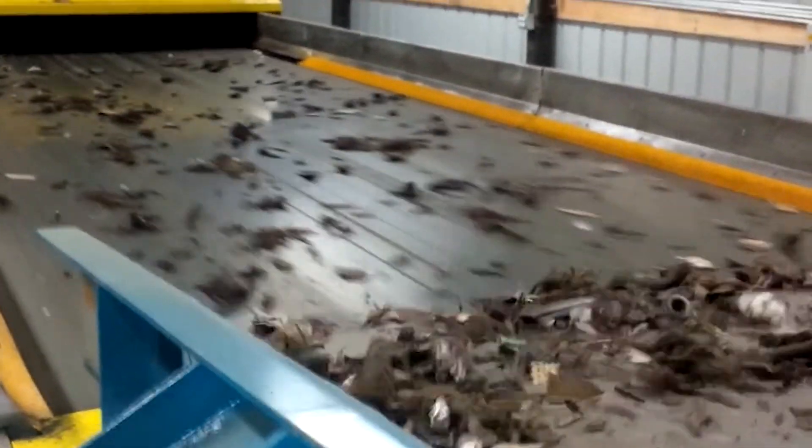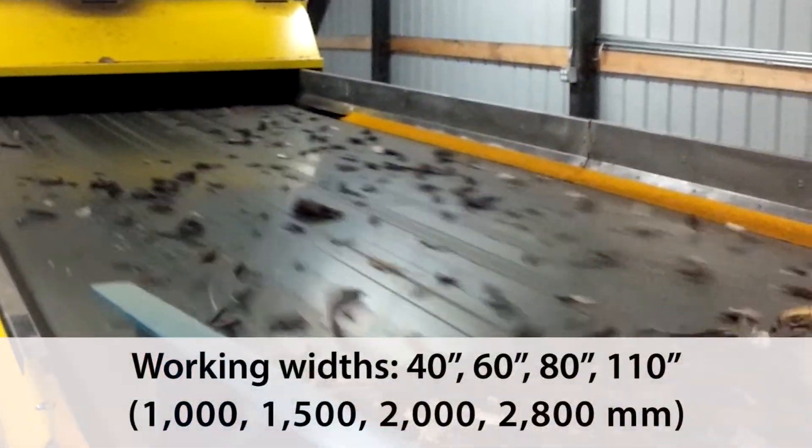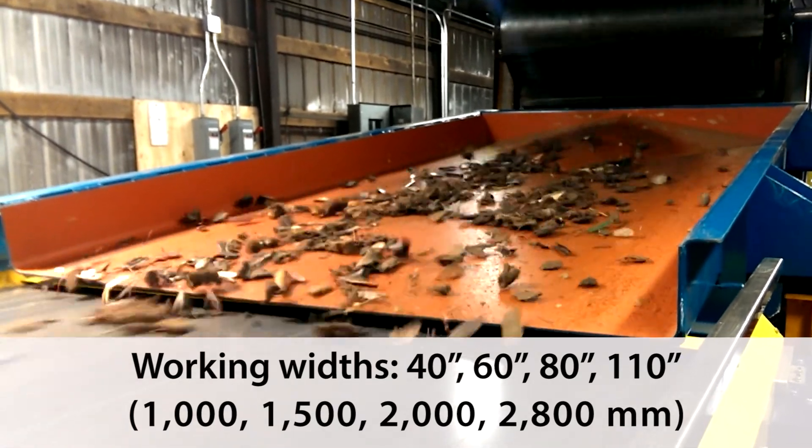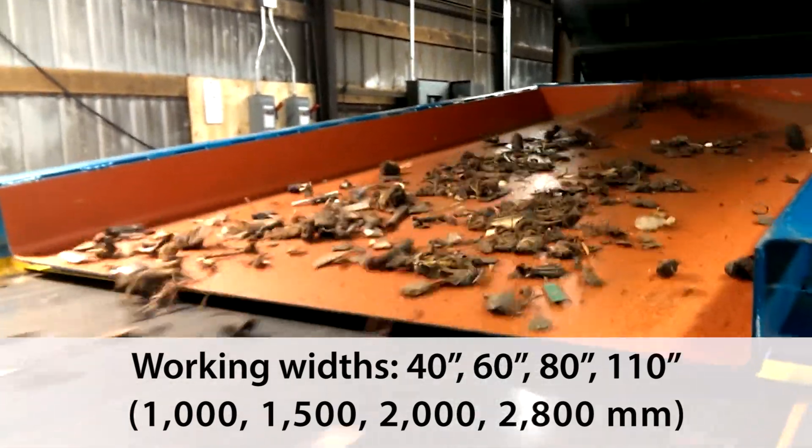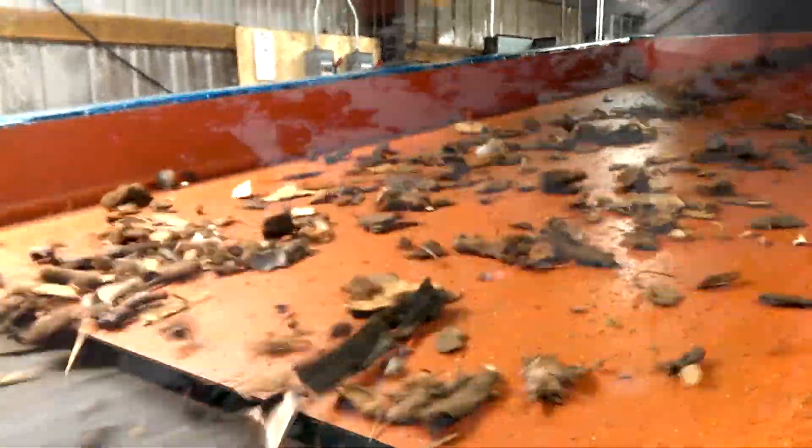The Verisort sensor sorting systems are available with working widths between 40 and 110 inches. Depending on your available space, we can also offer the Verisort sensor sorting systems with three different belt conveyor lengths.